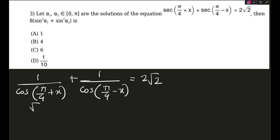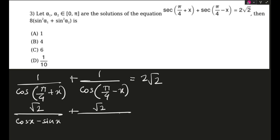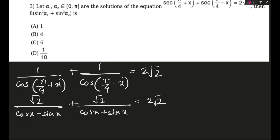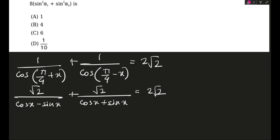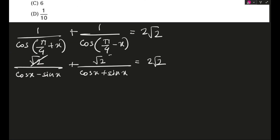If we manipulate this a bit, this will be √2/(cos x − sin x) plus √2/(cos x + sin x), and this equals 2√2. Taking the LCM and doing the addition of these two fractions — first, √2 gets cancelled from everywhere, and second, when we add the two, cos x − sin x + cos x + sin x gives 2 cos x.